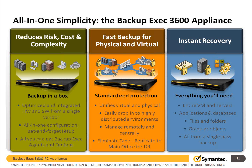The Backup Exec 3600 has been optimized to run Backup Exec, taking the headache out of speccing the box with sufficient RAM for deduplication. It includes all-you-can-eat Backup Exec agents — unlimited agents pushed out to as many servers as you want — and potentially eliminates the need for tape by replicating data from one site to the other. As with Backup Exec 2012, the appliance supports restores from physical or virtual machines all the way down using granular recovery technology, down to individual application objects such as an Active Directory user or a single Exchange email.